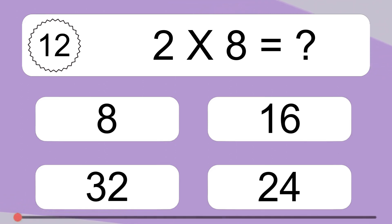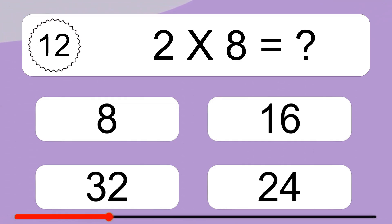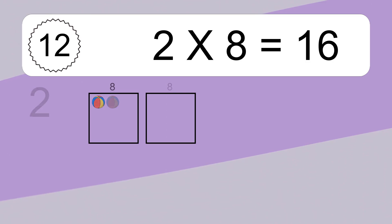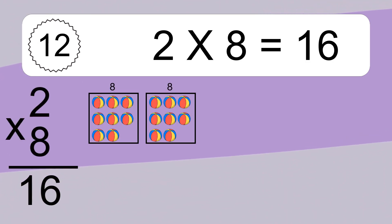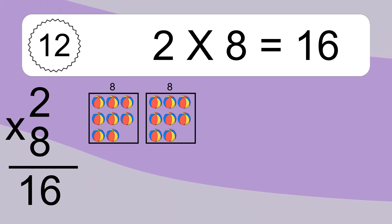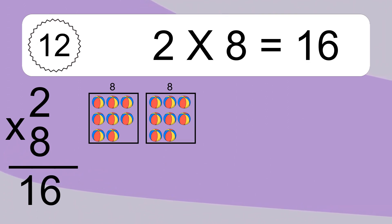2 times 8 equals 16. We have 2 boxes, and each box has 8 colorful balls inside. If you count all the balls in all the boxes together, you will have 2 times 8 balls. This equals 16 balls.